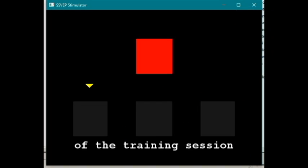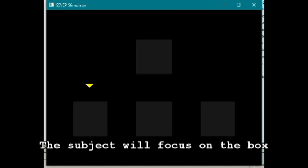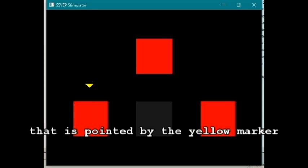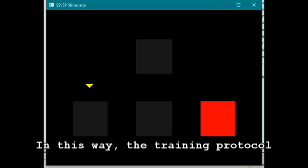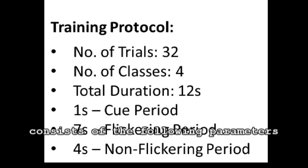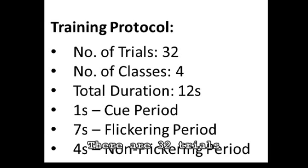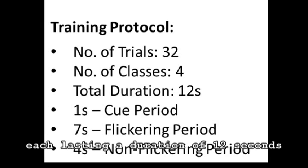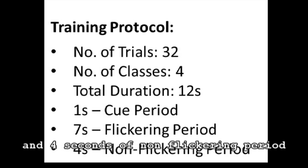Now here is an example of the training session. The subject will focus on the box that is pointed by the yellow marker. In this way, the training protocol consists of the following parameters. There are 32 trials, each lasting a duration of 12 seconds. That includes the 1 second cue period, 7 seconds of flickering period and the 4 seconds of non-flickering period.